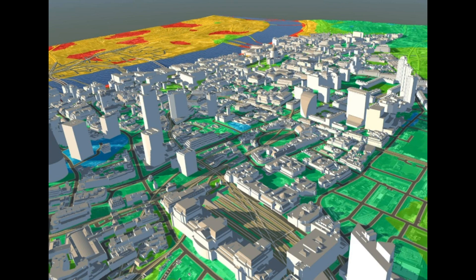Global Navigation Satellite System is a system of satellites that provide autonomous geospatial positioning with global coverage. Photogrammetry is the practice of determining the geometric properties of objects from photographic images. Remote Sensing is the acquisition of information about an object or phenomenon without making physical contact with the object.